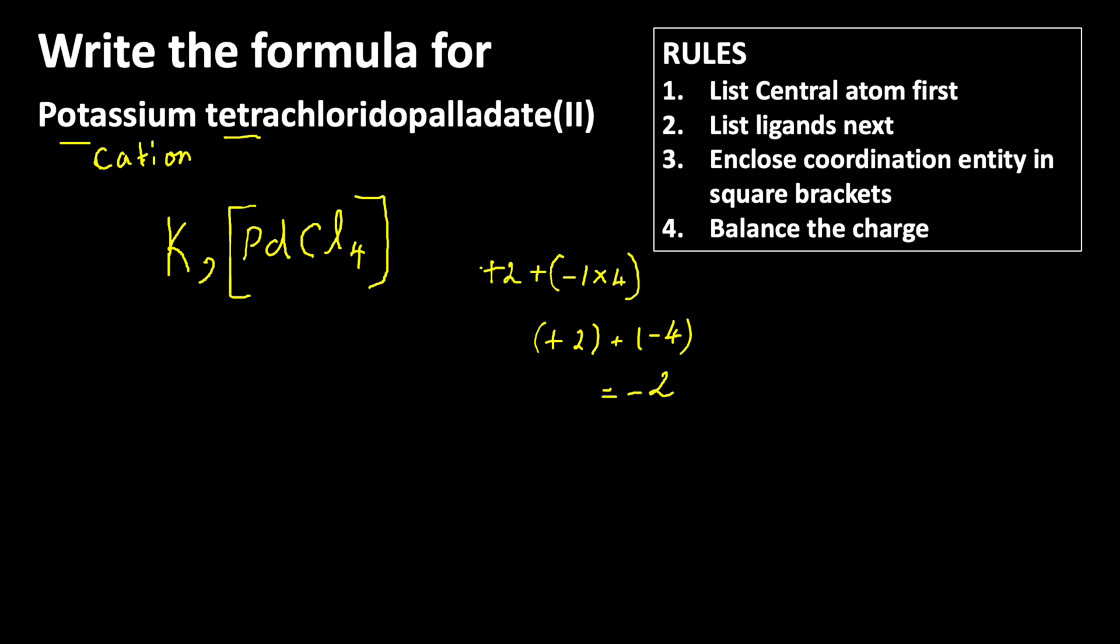So we could write K2. So K2[PdCl4] is the formula for potassium tetrachloridopalladate(II). Thanks for watching.